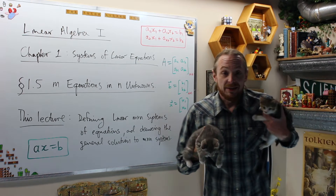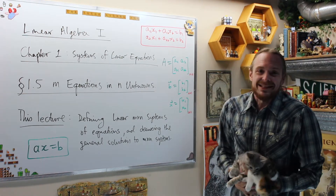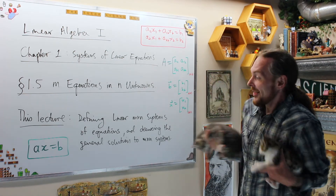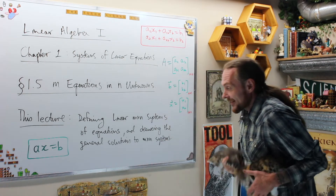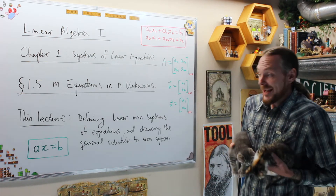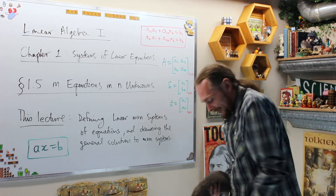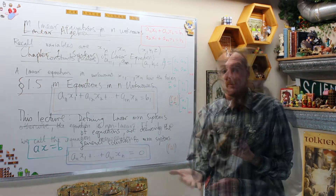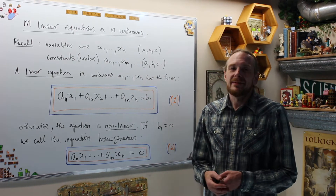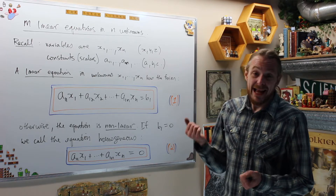Chapter 1 is systems of linear equations. What we're going to try and do is discuss M equations and N unknowns. Specifically this lecture, we're going to define what a linear M by N system is and then discuss what it means to be the general solution to such a system.